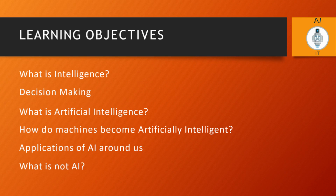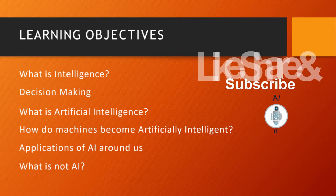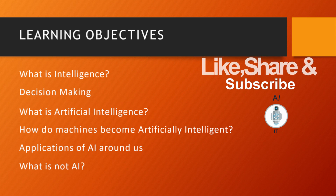In this session, we have learned what is intelligence, the different types of intelligences, the role of decision-making in being intelligent, what is artificial intelligence, how a machine becomes artificially intelligent, what are the applications of AI, and what is AI and what is not. I hope you have understood these clearly. Please do like, share, and subscribe to my YouTube channel. Thank you.